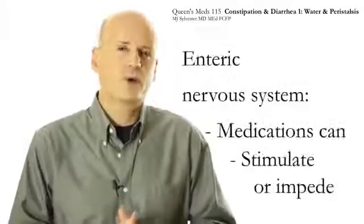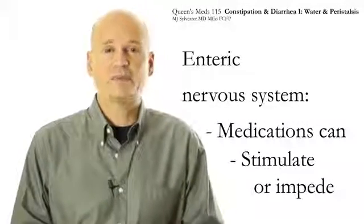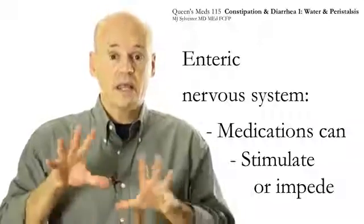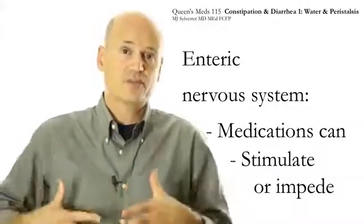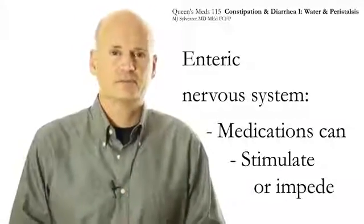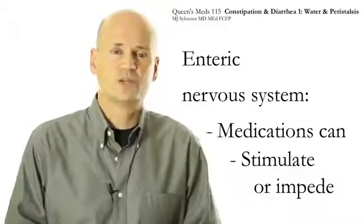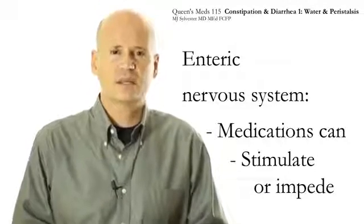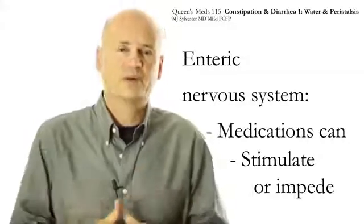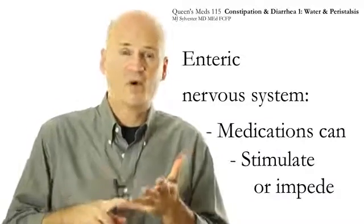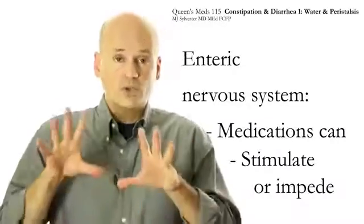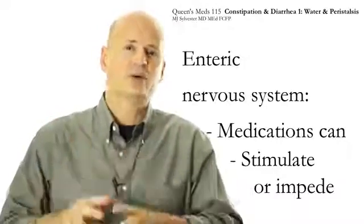The other thing that can affect your enteric nervous system are drugs. Now you're probably already familiar with one of those drugs, and that is caffeine. When you take caffeine, it will increase the peristalsis through its effect on your enteric nervous system. The other class of drugs you may be familiar with are opiates. You know that there are opiate receptors in your enteric nervous system, so if you ever have codeine or morphine, that will slow down your peristalsis.